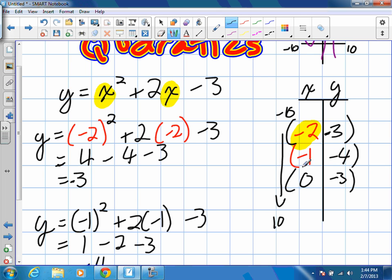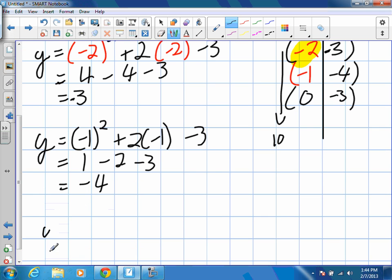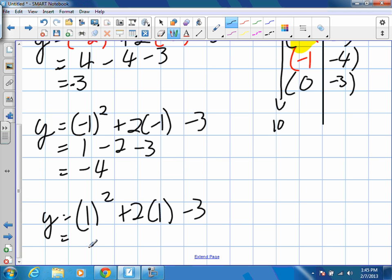From there, I'll do one more. We'll do positive 1. And then we can probably estimate the entire rest of this graph. So, 1 squared plus 2 times 1 minus 3. We're going to get 1 plus 2 minus 3. And that's going to give us what value? 0. Very good. So, we have another coordinate, 1 and 0.